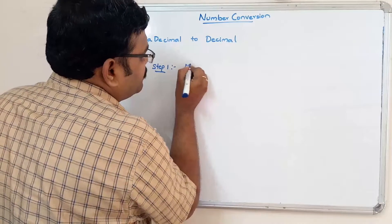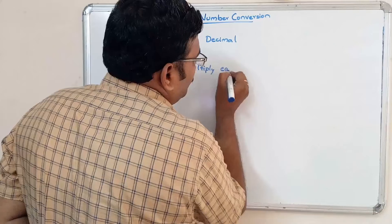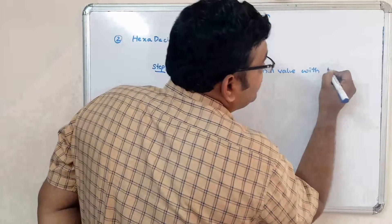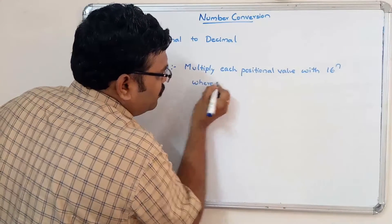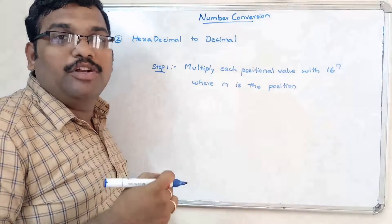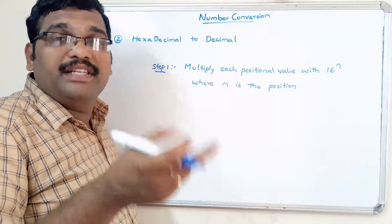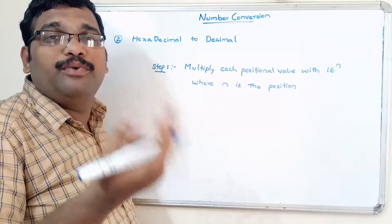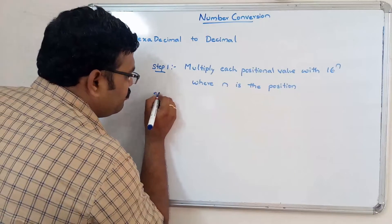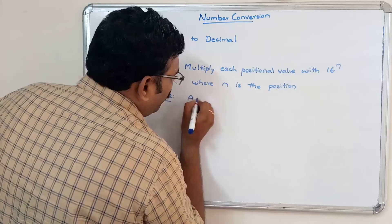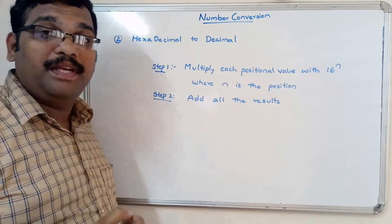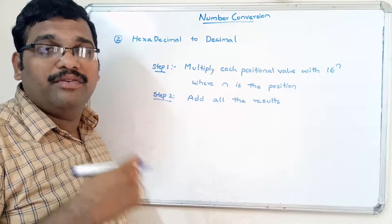Step 1: Multiply each positional value with 16 power n, where n is the position. The position starts from 0 — units position is 0, tens position is 1, hundreds position is 2, thousands position is 3, and so on. Step 2: Add all the results, starting from the LSB and continuing until we reach the MSB.